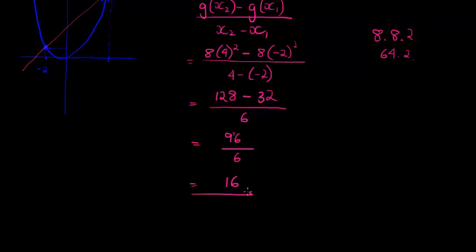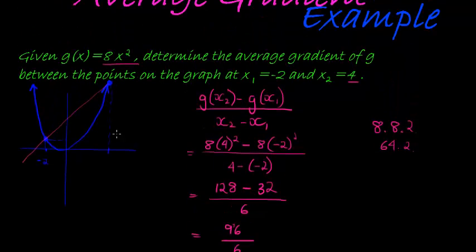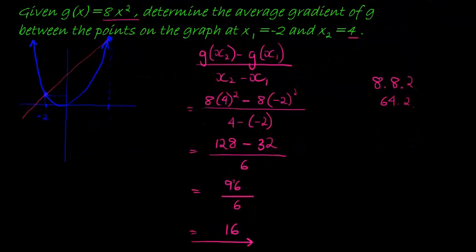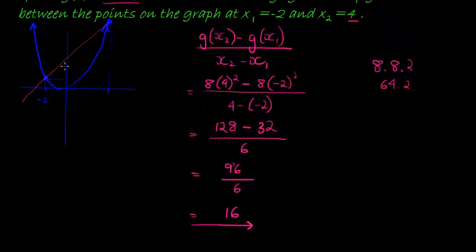Okay, so the average gradient between those two points is 16. You can see it's a positive number, which means that it must be upwards. What it means is that for every one step forward, we are going 16 steps upwards. In other words, the ratio between opposite and adjacent of this triangle is equal to 16. That is very, very steep.